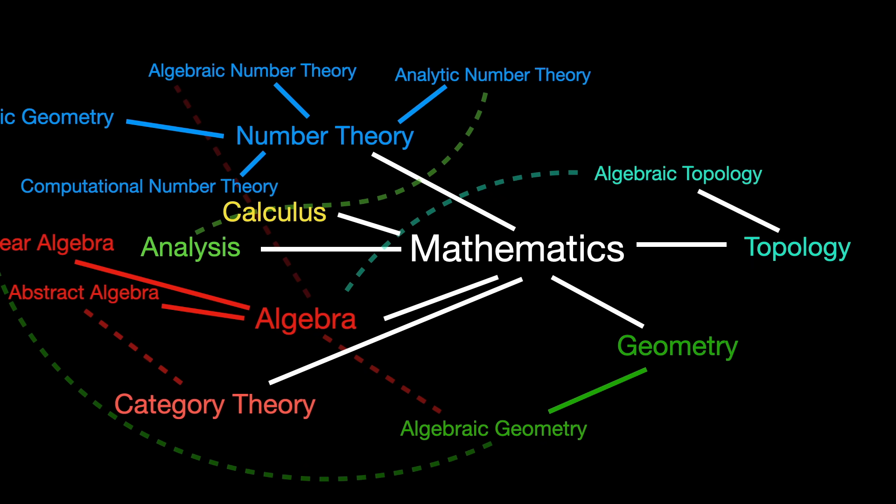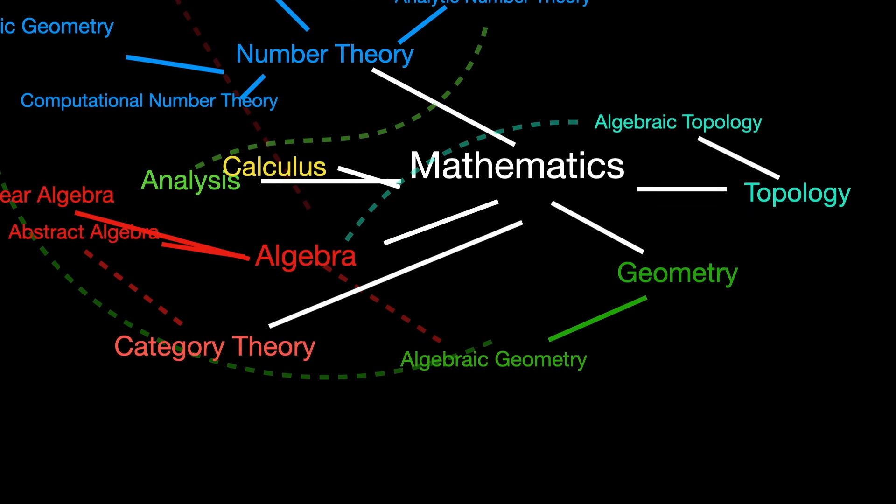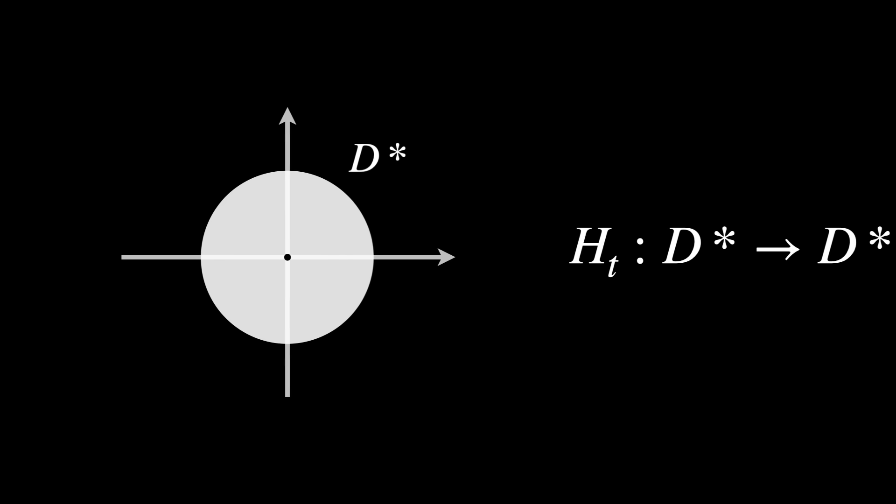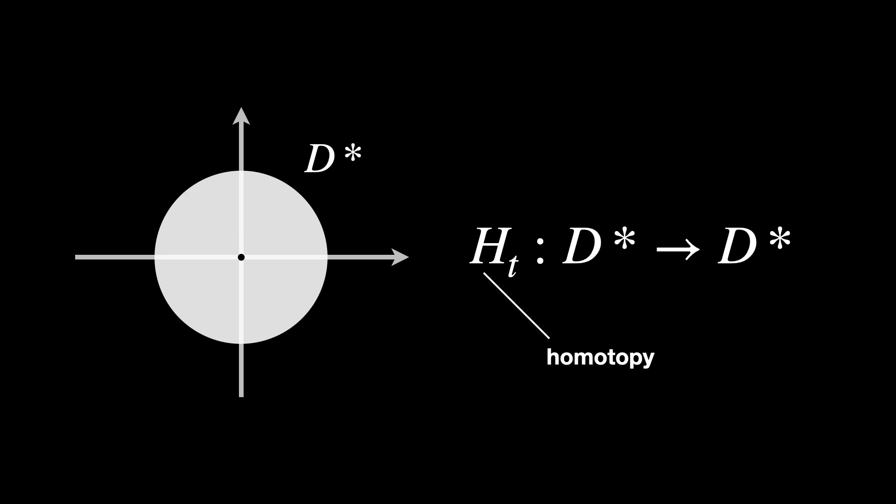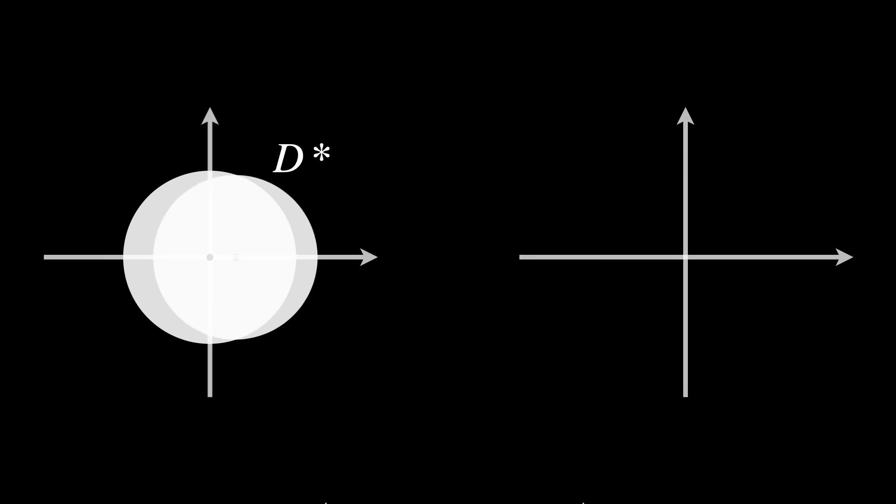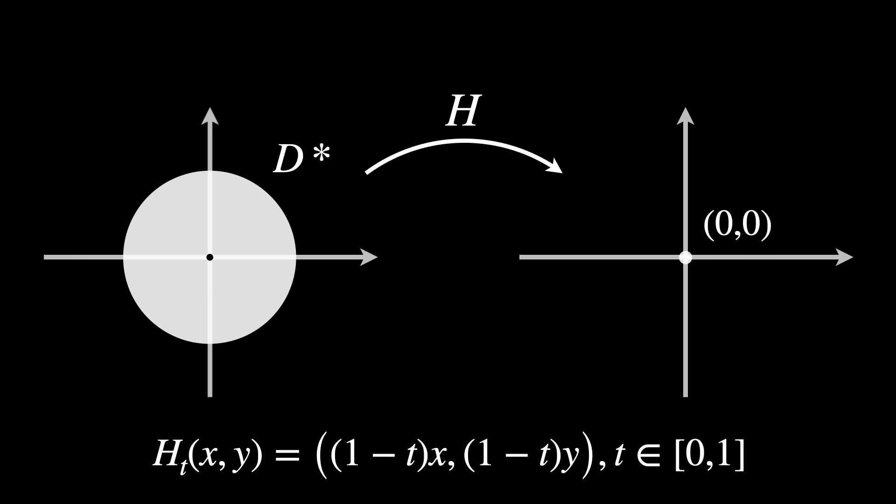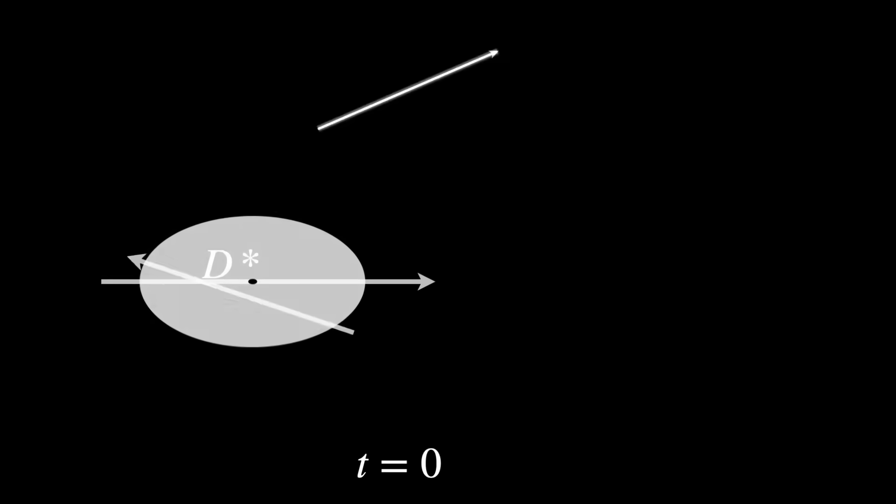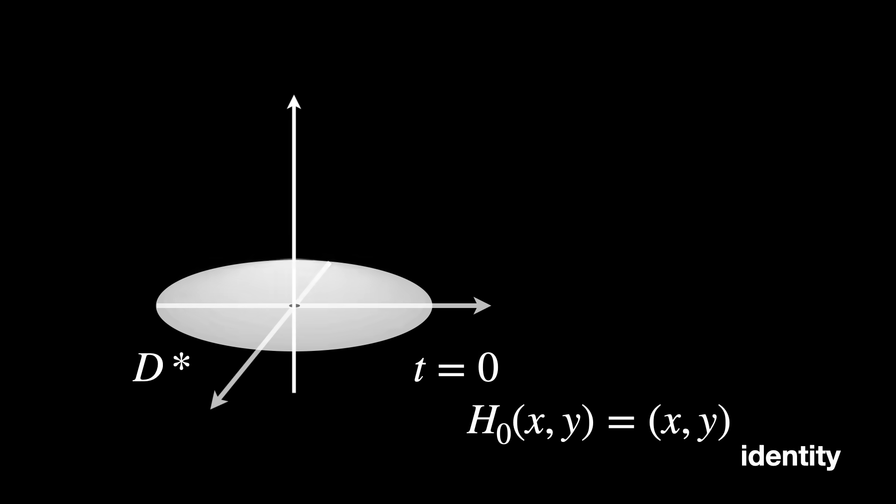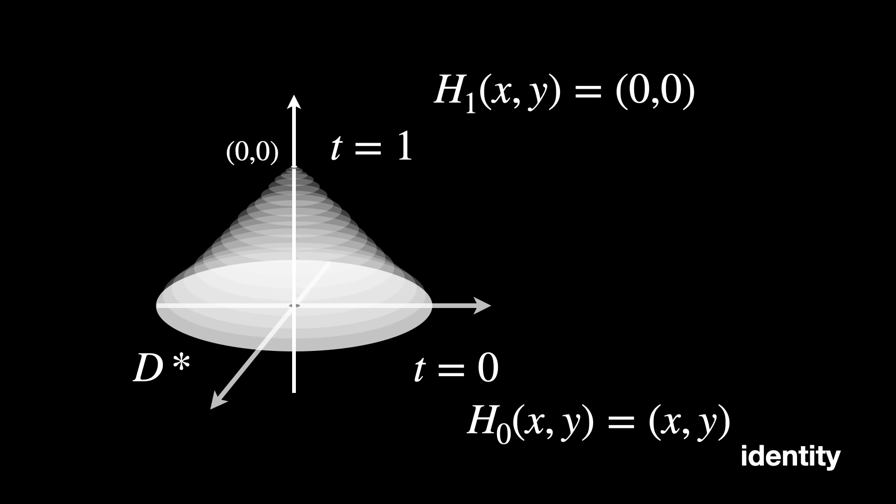Algebraic Topology. It studies spaces through algebraic structures, known as topological invariants, such as homotopy and homology groups. The goal is to assign algebraic structures, such as groups, rings, and vector spaces, to topological spaces. This helps to classify and distinguish these spaces based on their topological properties.